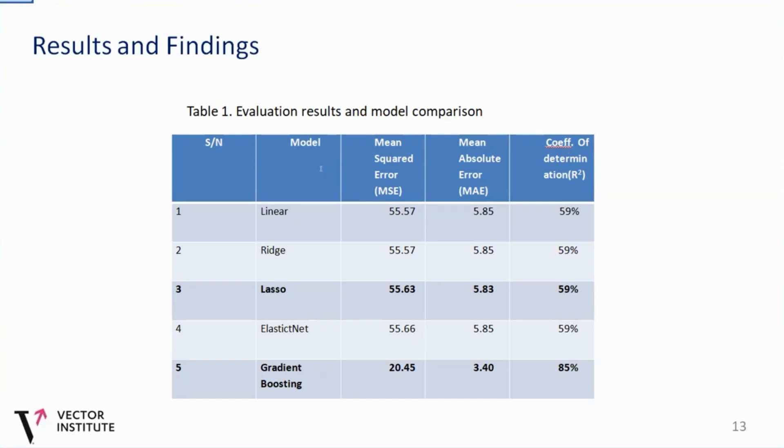So we compared our model with the linear model, the rich model, the lasso model, and the elastic net model. And we can see from here that our gradient boosting model outperformed other models by 85 percent degree accuracy. And of course, it has lower mean squared error and low, very low mean absolute error as compared to other models. What this means, actually, is that when we take any future in our data sets, any independent variable, we can actually predict the actual value with 85 percent degree of accuracy.